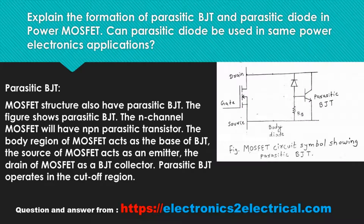The MOSFET structure also contains a parasitic BJT. The figure shows the parasitic BJT. For an N-channel MOSFET, the parasitic transistor is of NPN type. The body region of the MOSFET acts as the base of the BJT, the source of the MOSFET acts as the emitter, and the drain of the MOSFET acts as the BJT collector.